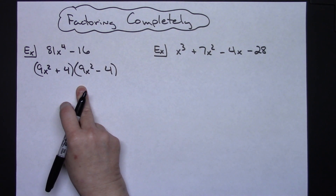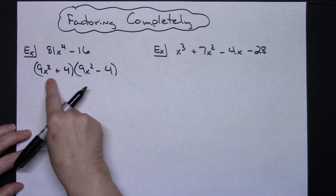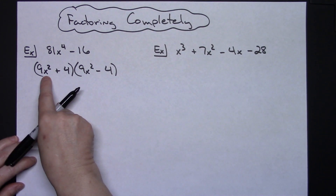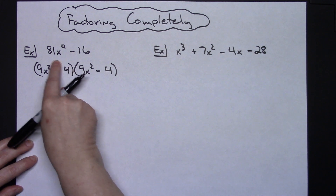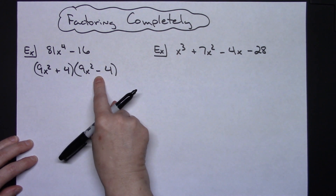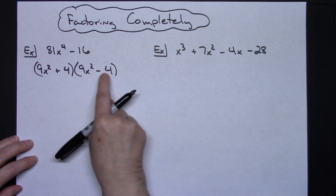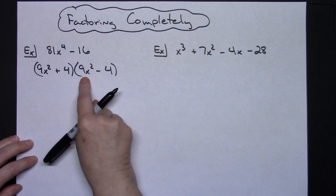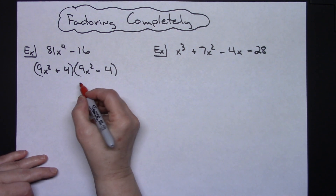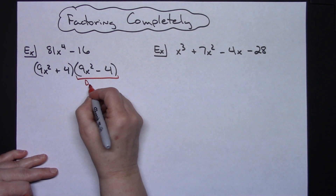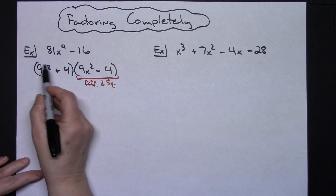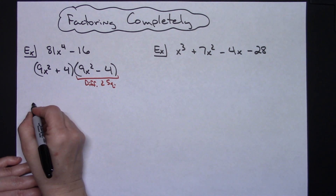Now if I'm factoring completely, I take a look at each factor to see if anything else can be factored. This first binomial has a plus sign, so (9x² + 4) cannot be factored again. But looking at (9x² - 4), I have a minus sign, two terms, and both are perfect squares — the square root of 9x² is 3x and the square root of 4 is 2 — so this part can be factored again as a difference of two squares. So (9x² + 4) stays as is.